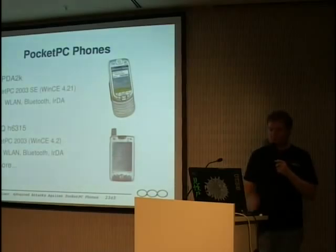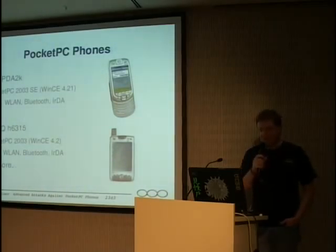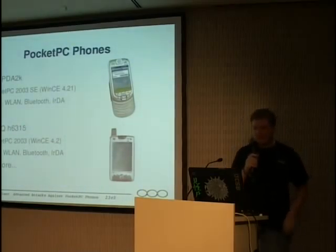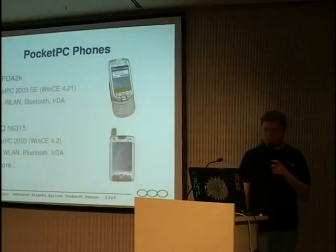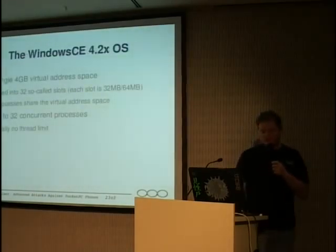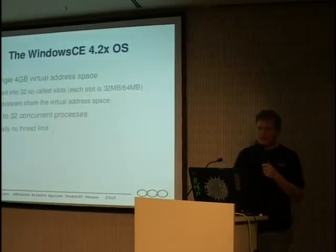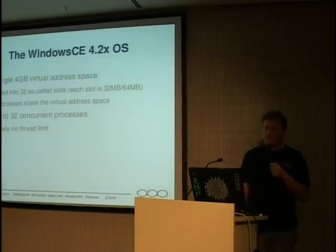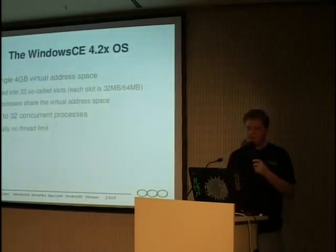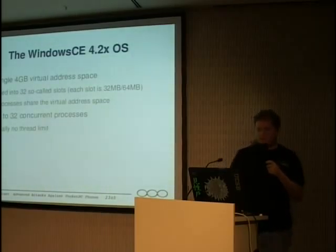Some sample devices I worked with are basically a PDA with a GSM chip included — just a PDA turned into a phone. Nothing too interesting besides the wireless LAN, which makes for a nice attack vector against these devices. The Windows CE OS is pretty bad: they don't have real virtual address spaces, they're limited to 32 concurrent processes. You don't have a thread limit, but normally you don't have a lot of memory, so that limits the number of threads. The 32 concurrent process limitation is especially interesting for writing exploits — keep that in mind for later.